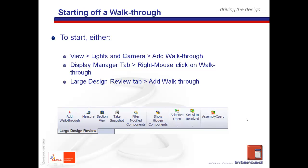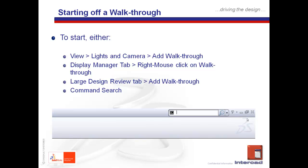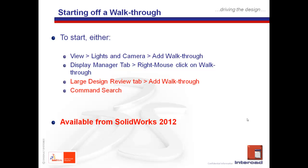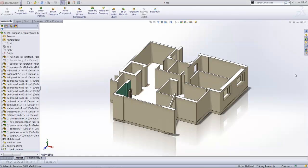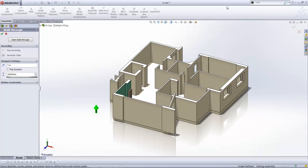The final option you could use to access the walkthrough command is with the Command Search capability, which effectively allows you to search for a specific command with an appropriate keyword. I should highlight that the last two options — the Large Design Review tab and Command Search — are only available from SOLIDWORKS 2012 onwards. To carry out a command search, go to the corner of the SOLIDWORKS screen, key in an appropriate keyword such as 'walk', click Add Walkthrough, and the walkthrough command is activated.